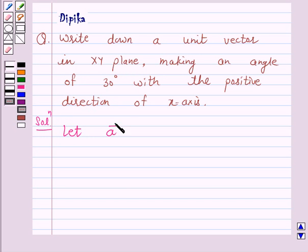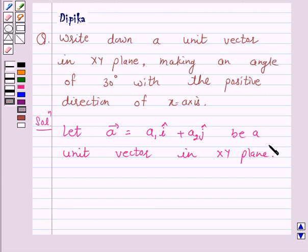vector a equal to a1i plus a2j be a unit vector in xy plane. Now, according to the question,